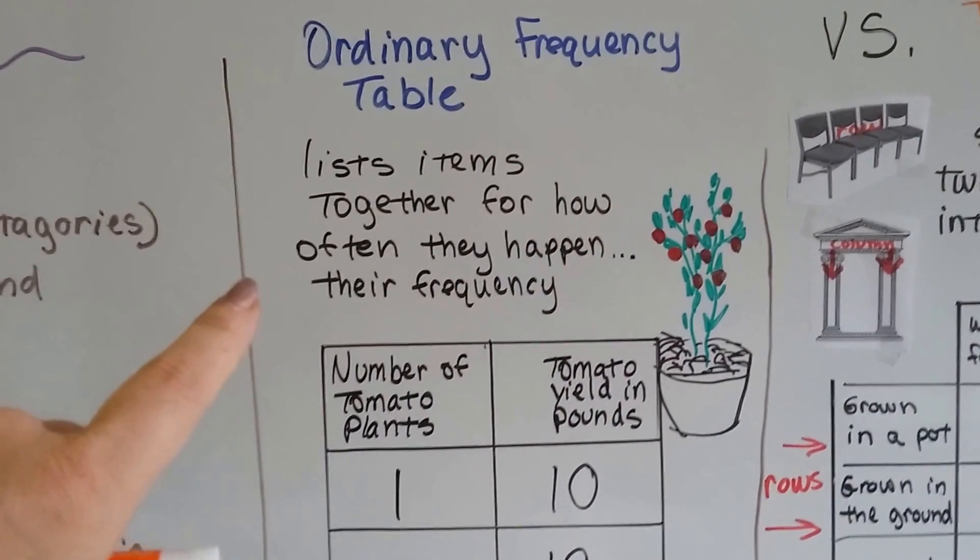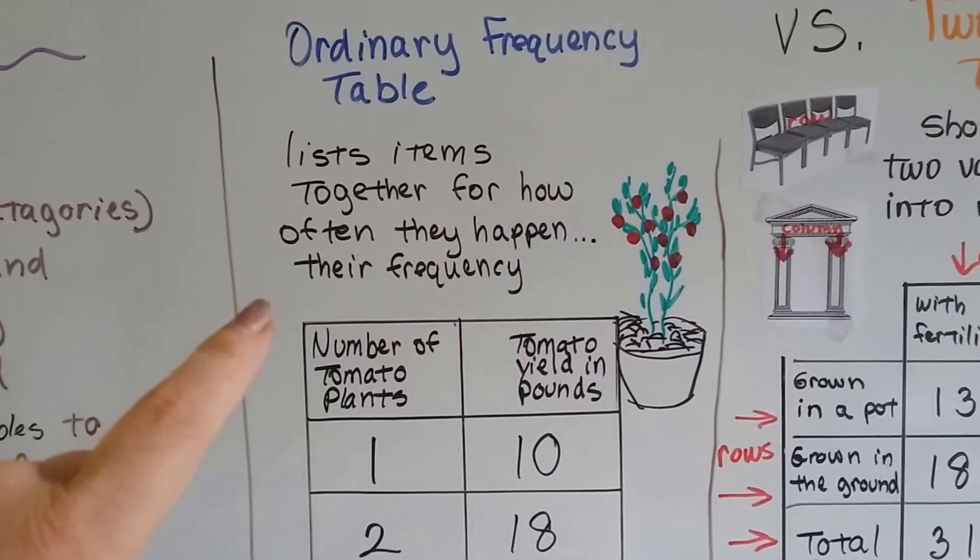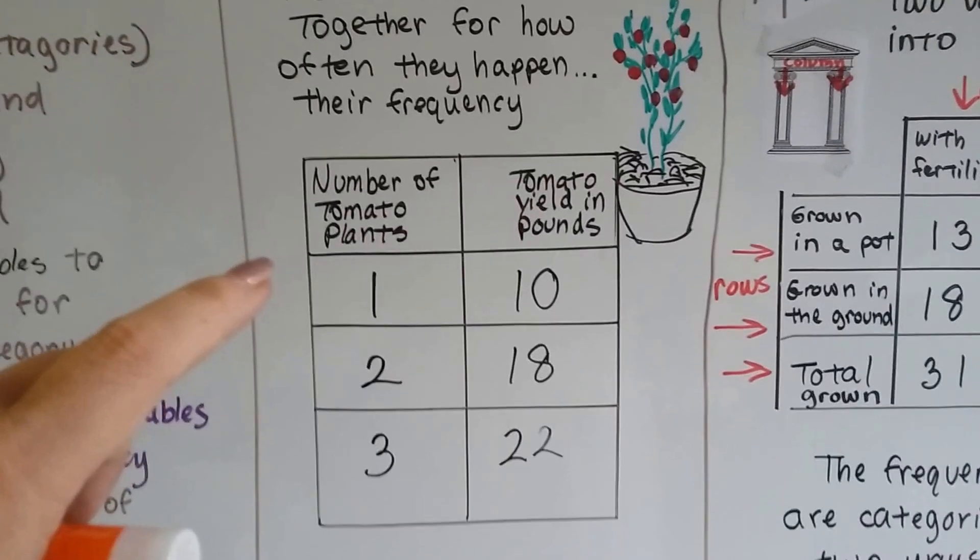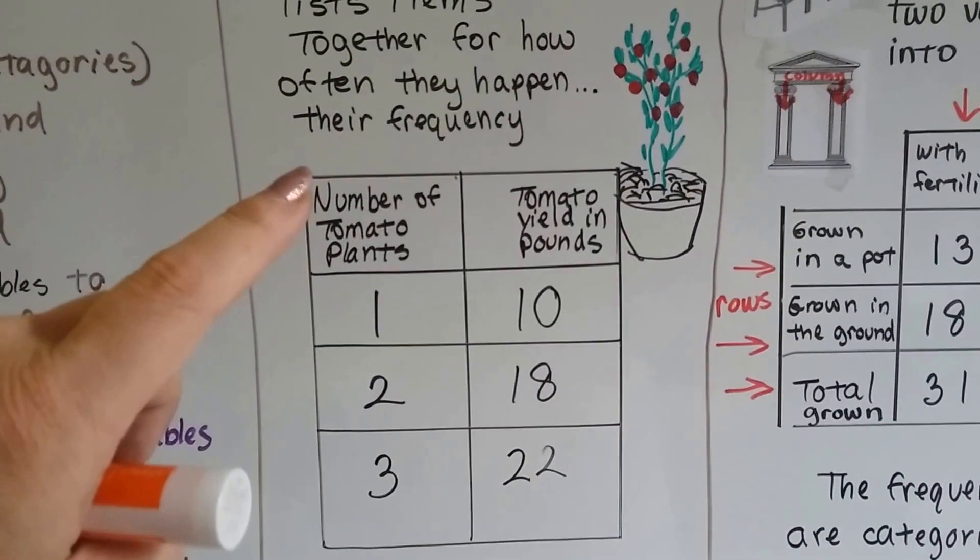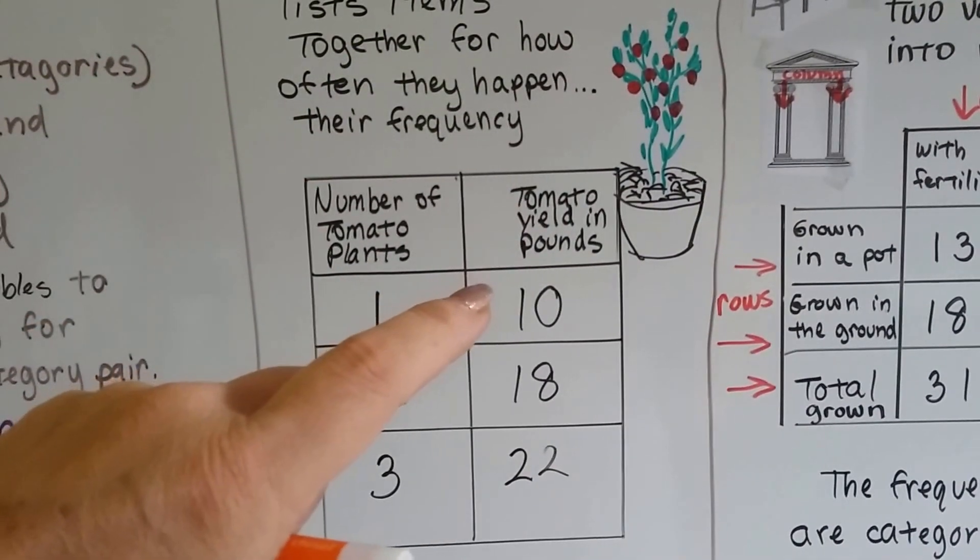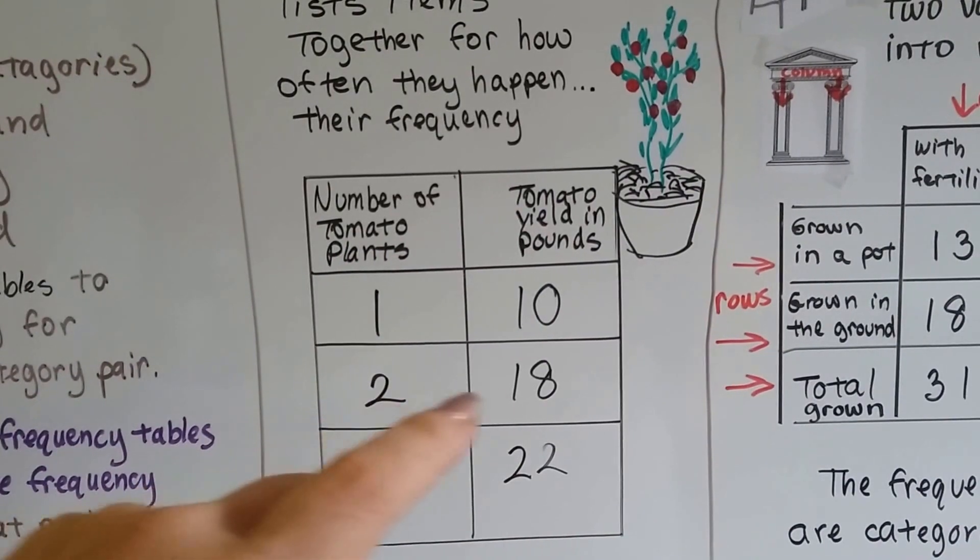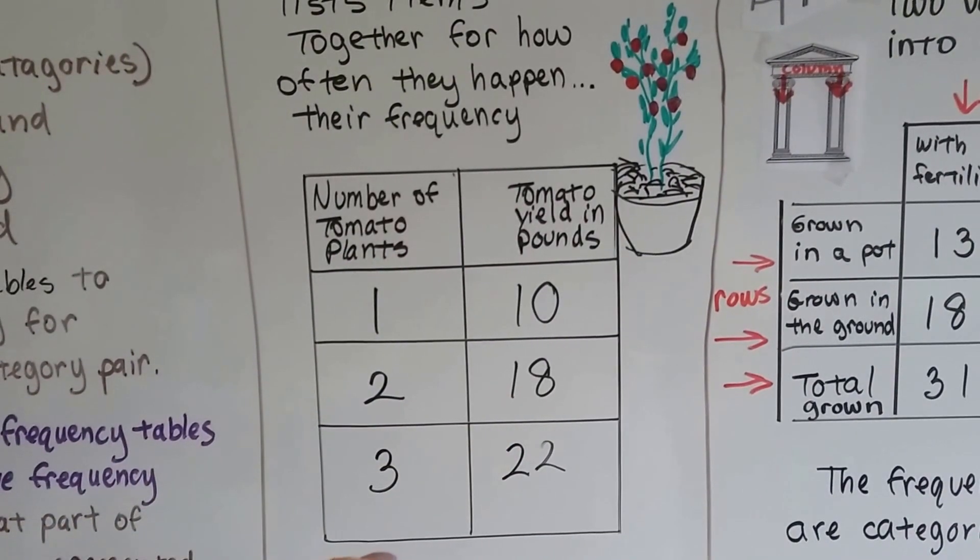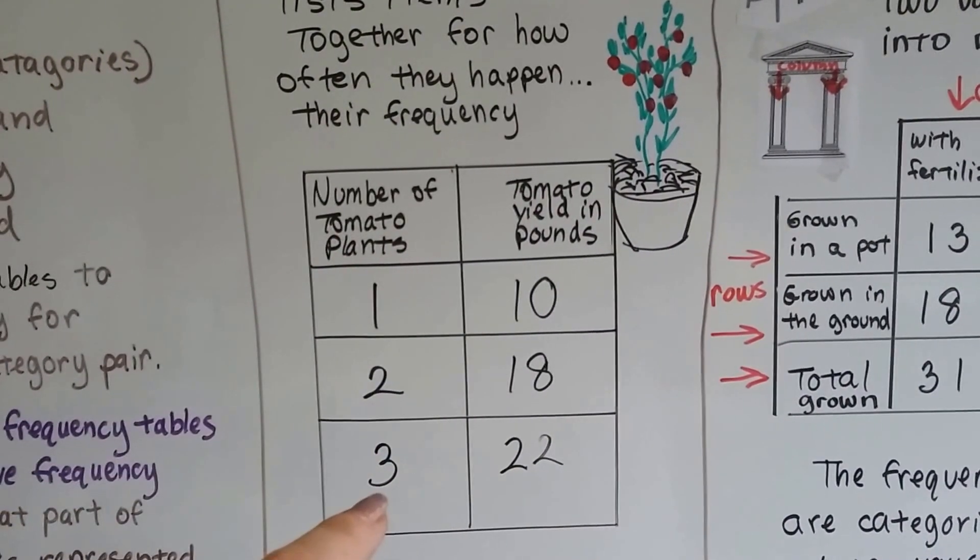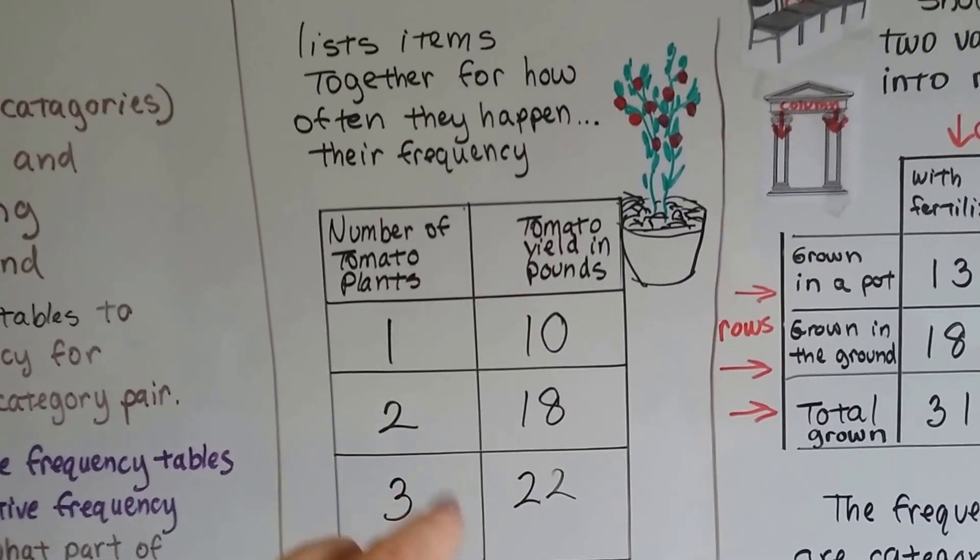An ordinary frequency table lists items together for how often they happen, their frequency. And we did one on tomato plants. Bob had one tomato plant that gave him 10 tomatoes. Then he planted 2 and he got 18 pounds of tomatoes. And when he planted 3, he got 22 pounds of tomatoes.